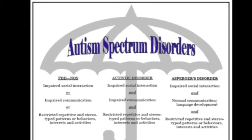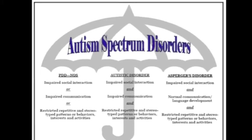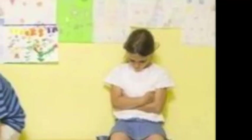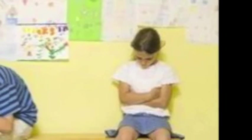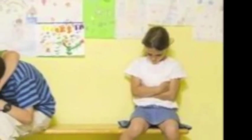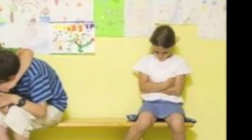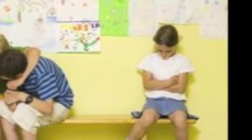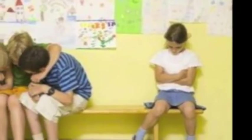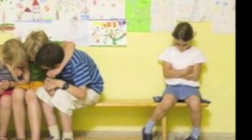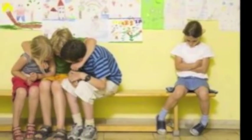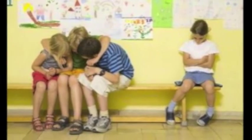Asperger's is usually diagnosed by the time a child starts school, but it may go undiagnosed because many believe that it is just social awkwardness. Children with Asperger's Syndrome typically exhibit social awkwardness and an all-absorbing interest in specific topics. Here's an example of a child with Asperger's being interested in one topic.